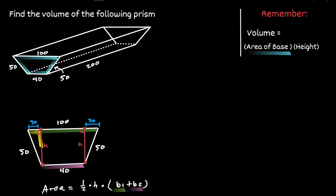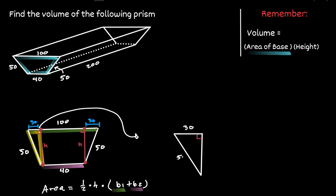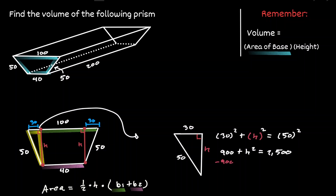Now we concentrate on this right triangle. We have enough information to find the height using the Pythagorean theorem: 30 squared plus the height squared equals 50 squared. So 900 plus the height squared equals 2,500. Subtracting 900 from both sides, the height squared equals 1,600. Taking the square root, the height equals 40.